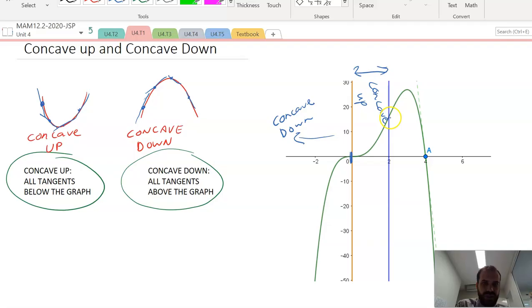And then all of this stuff, the tangents are all above the curve. So from 2 to positive infinity, we can say that it is again concave down. Okay, that's concave down and concave up.